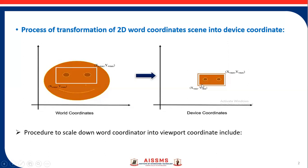Similarly, xvmin, yvmin, xvmax, and yvmax represent the lower-left and upper-right corner points of the viewport. As shown in this figure, point (xw, yw) in the window is to be mapped to point (xv, yv) in the viewport.